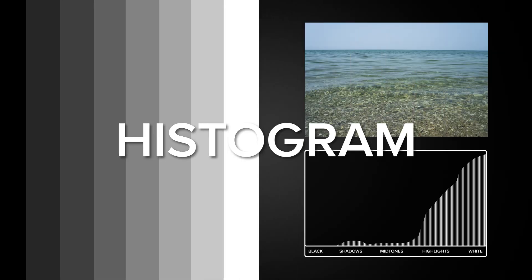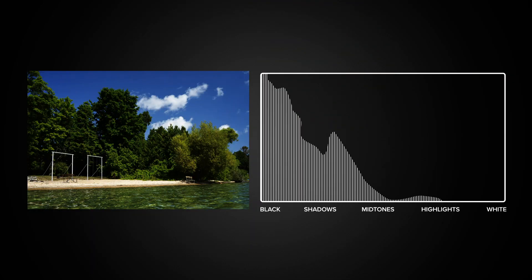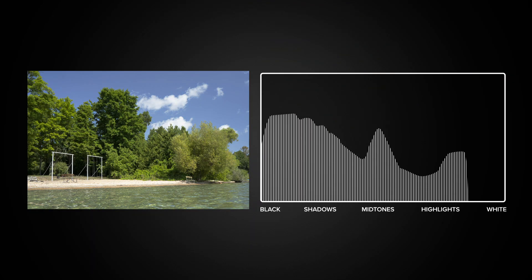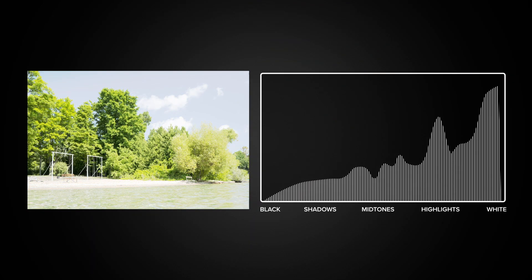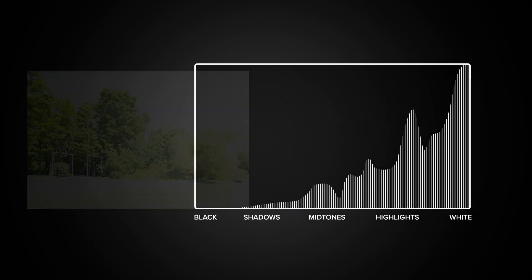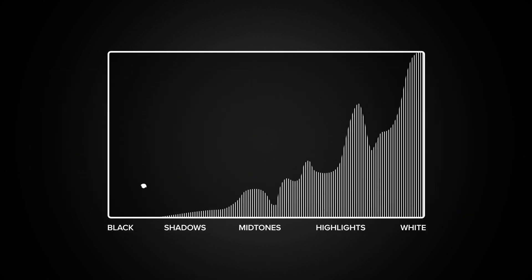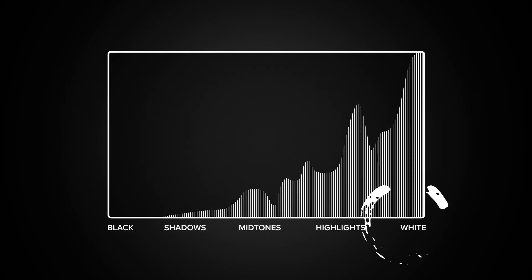A histogram is simply a graphical representation of the tonal values of a particular image. In other words, it shows the quantity of dark and bright values contained in your shot. The shape of the histogram changes depending on the exposure. Dark luminance values are shown on the left, while bright values are shown on the right.